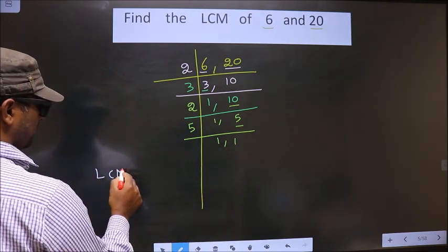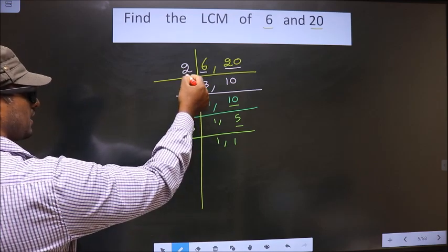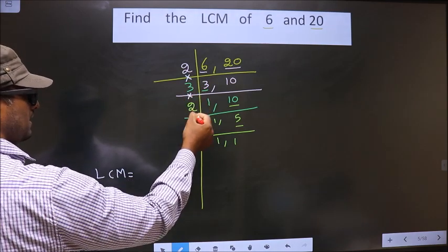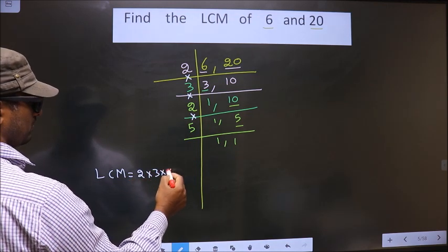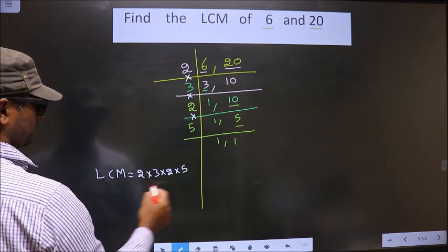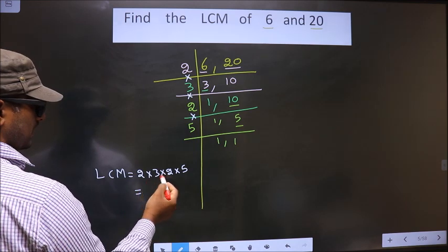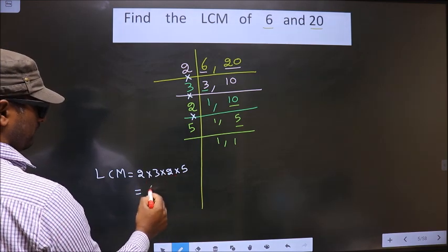So now our LCM is the product of these numbers. That is 2 into 3 into 2 into 5. So, 2 into 3 is 6. 6 into 2 is 12. 12 into 5 is 60.